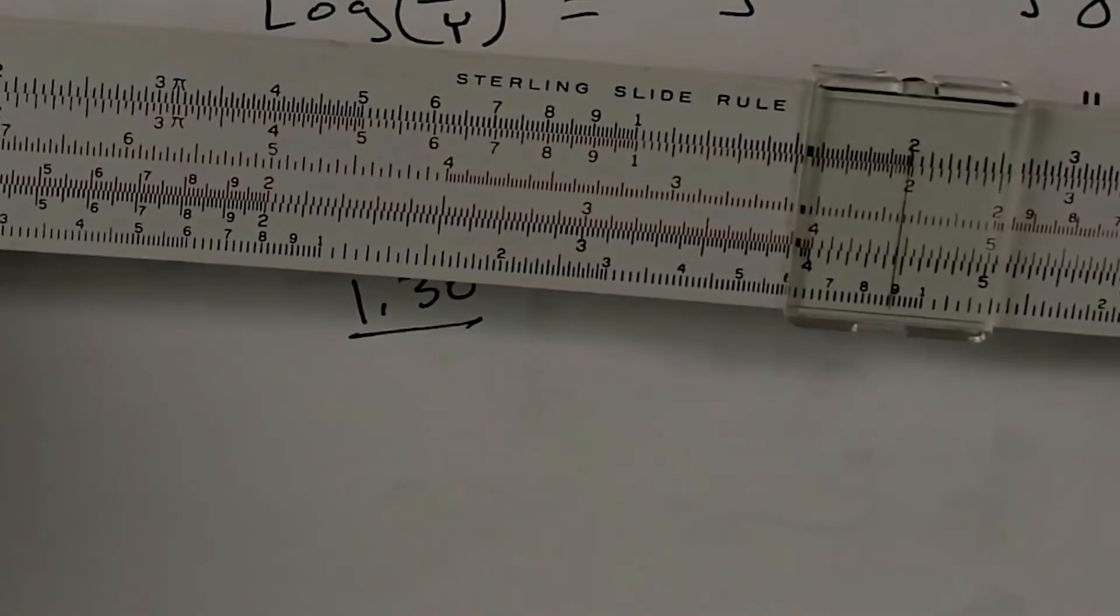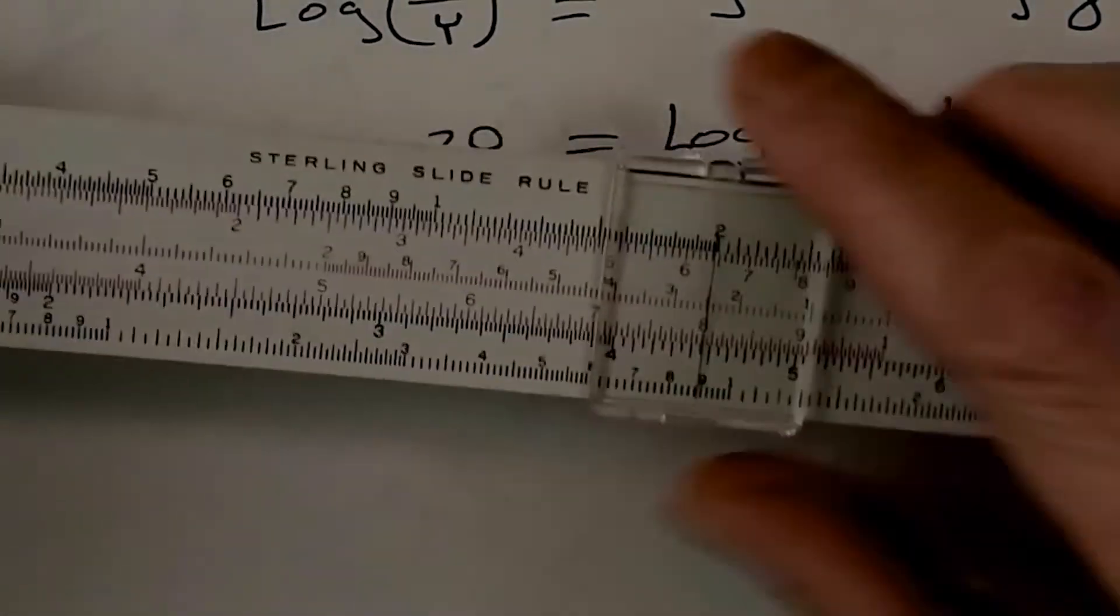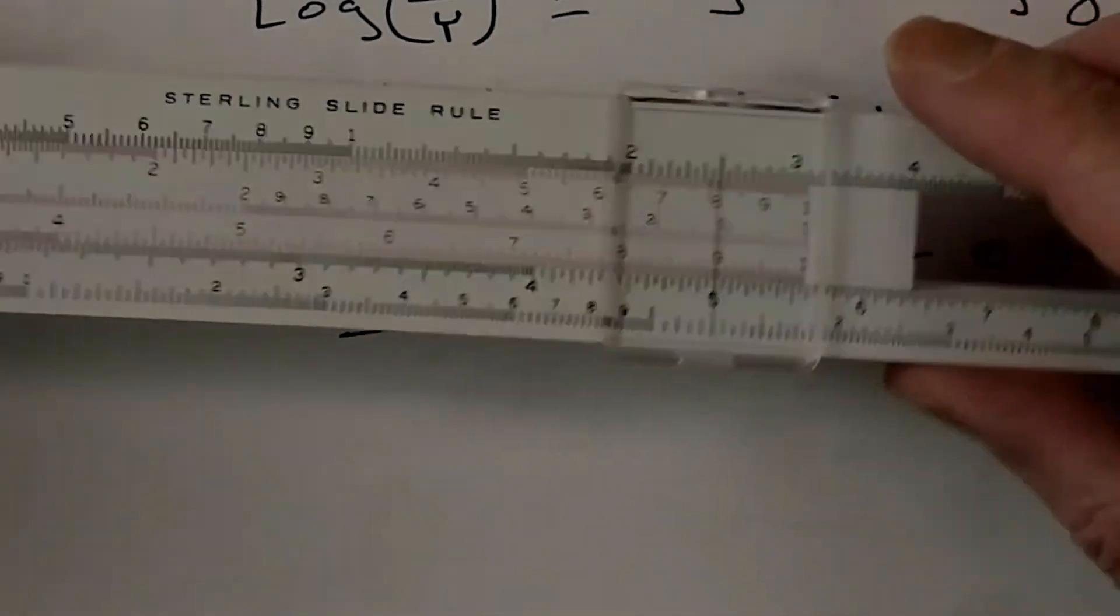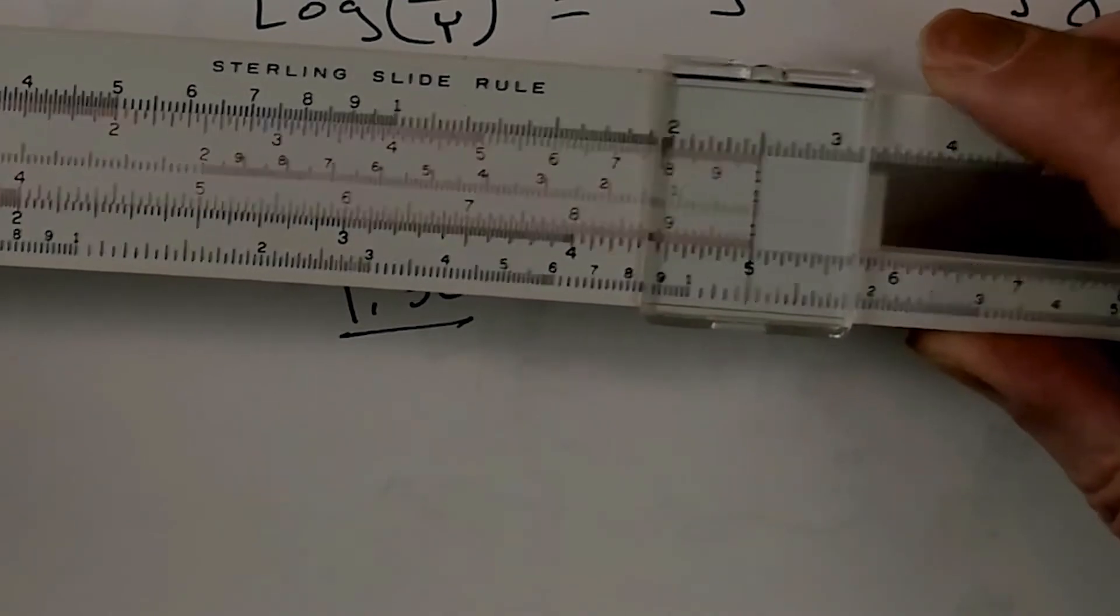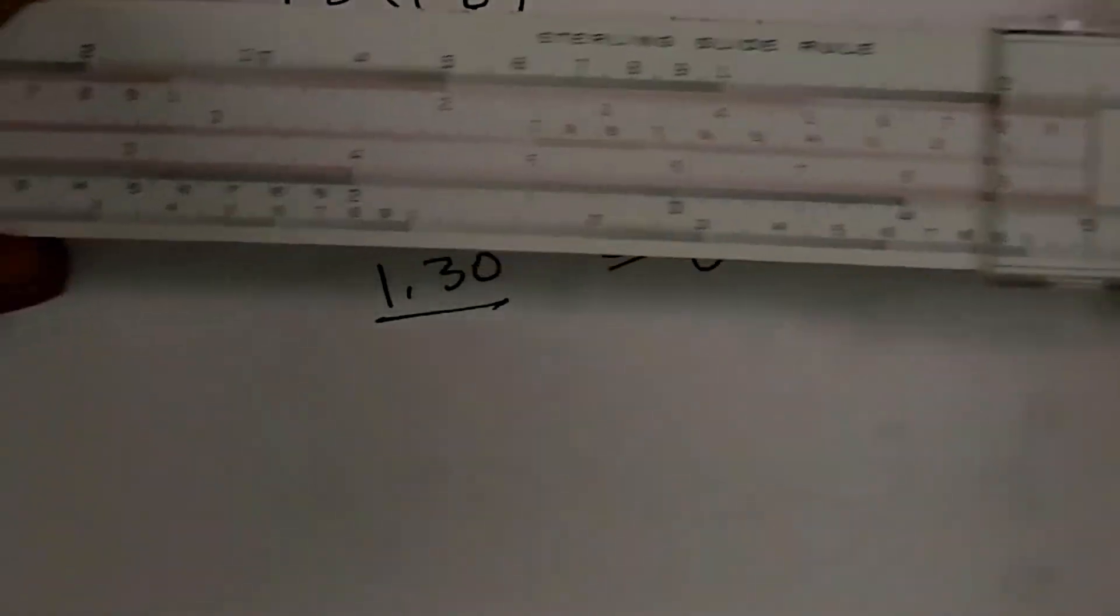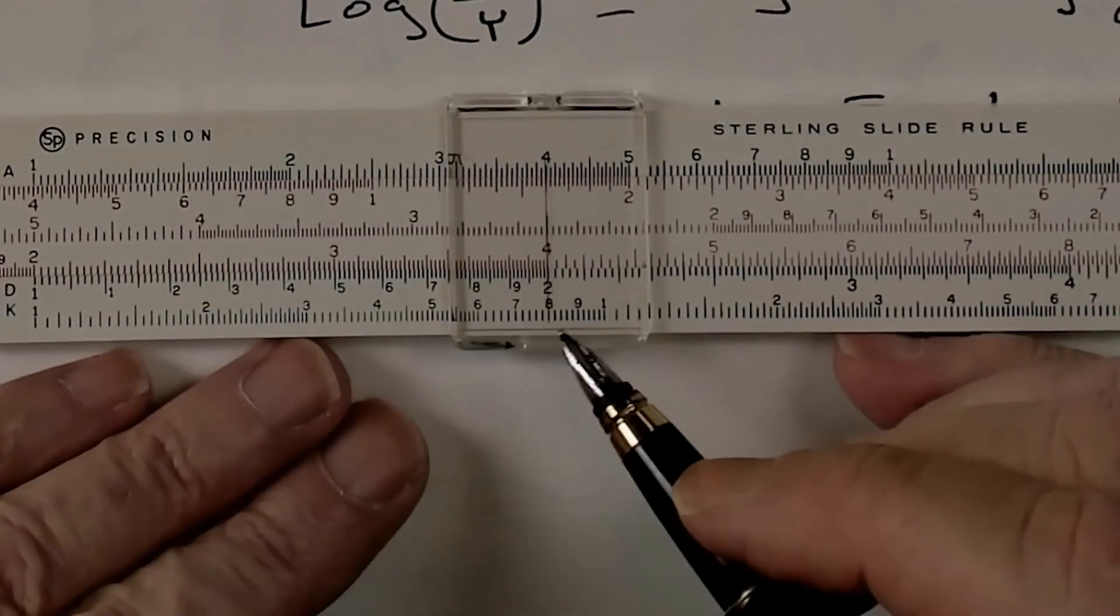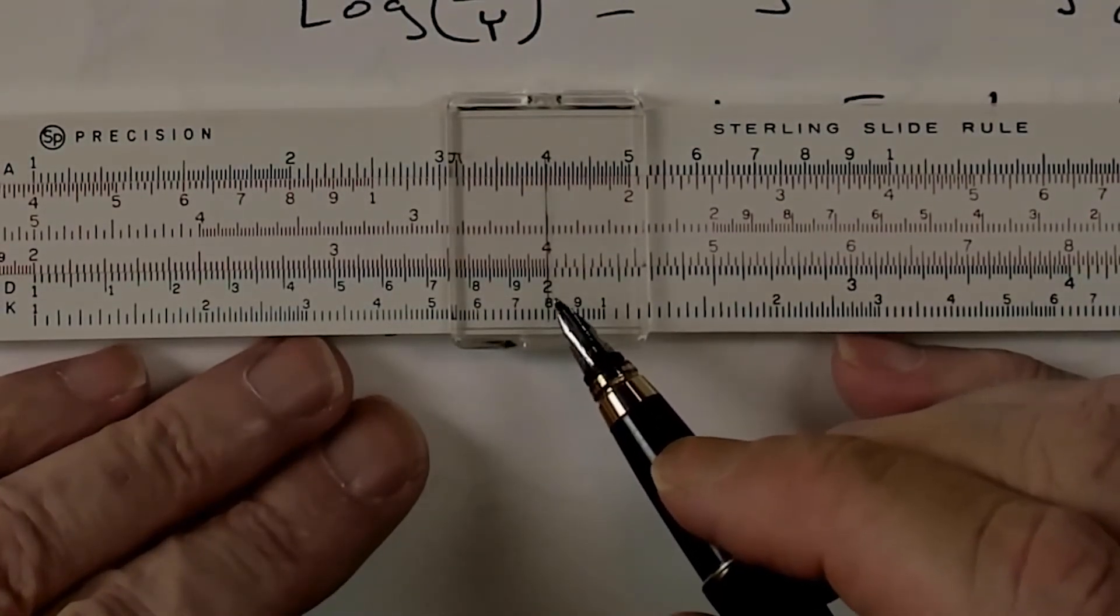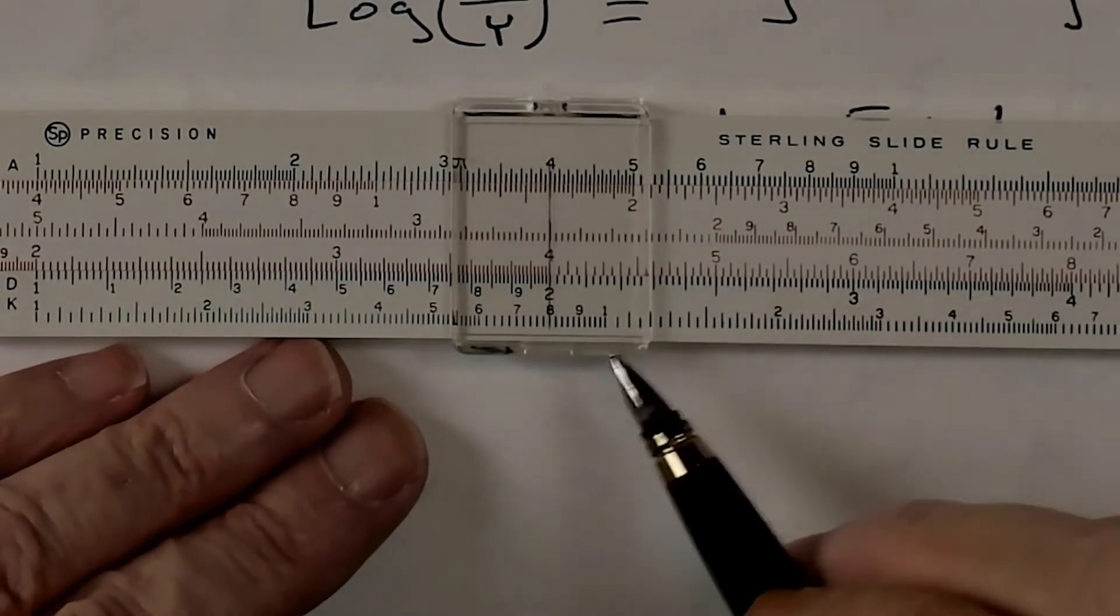Say we want to multiply 4 by 5. Well, the first thing that we would have to do is we would have to find a 5 here. And it's right there. Then we put the right index over that 5. And we come out to 4. And as you can see, right underneath it is a 2.